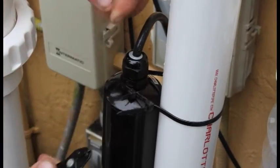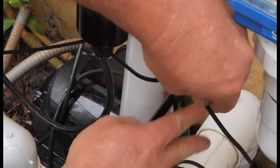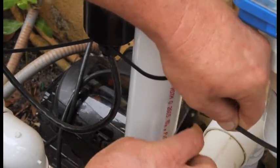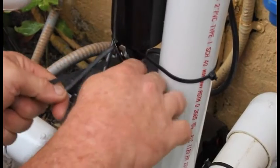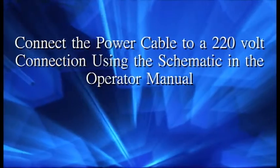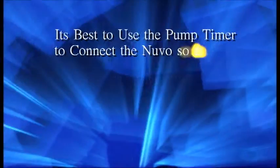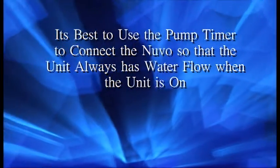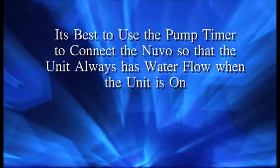Cut the excess ends off the tie wraps to make a neat installation. Connect the power cable to a 220 volt connection using the schematic and the operator manual included in the box. It is best to use the pump timer so that the Nuvo always has flow when the lamp is illuminated.